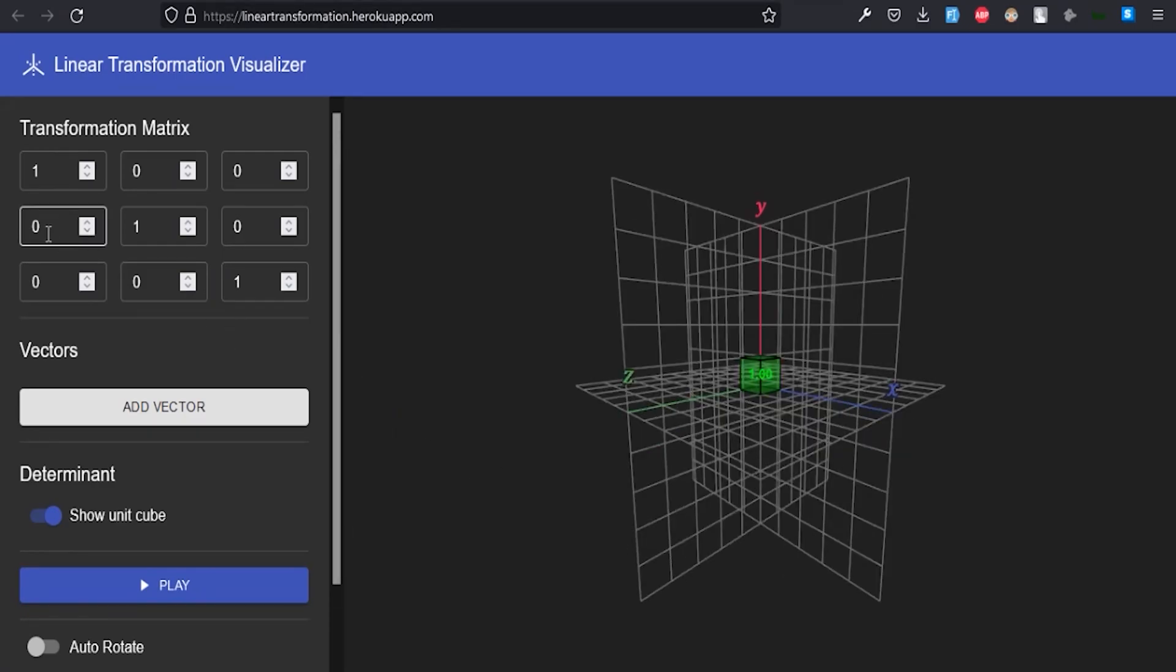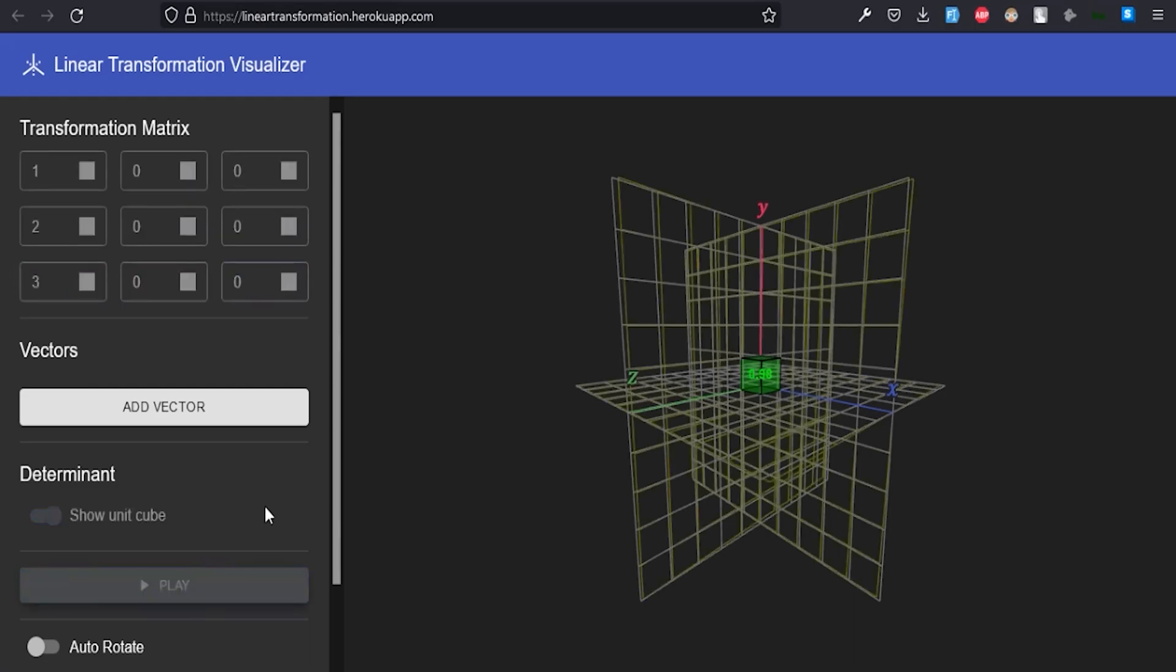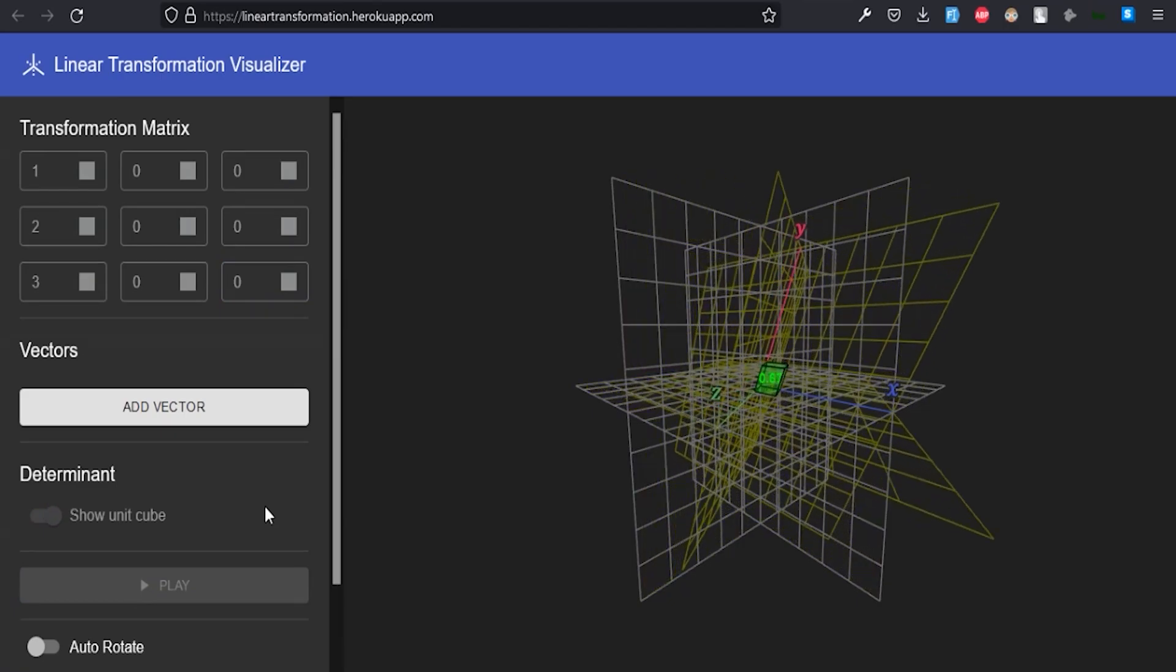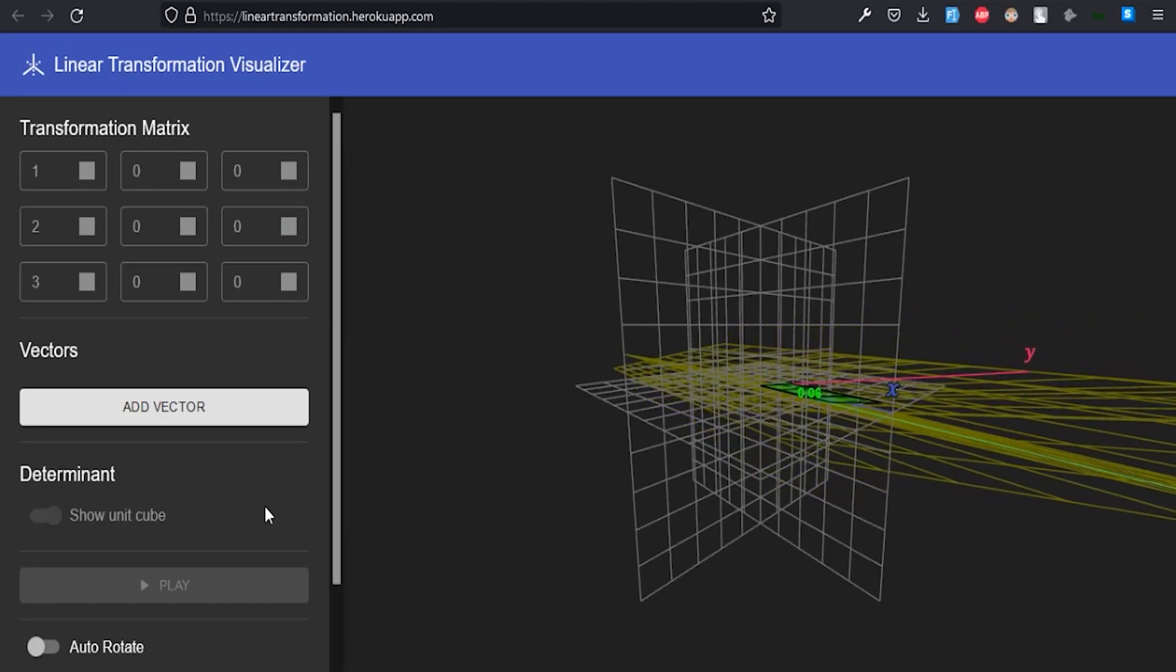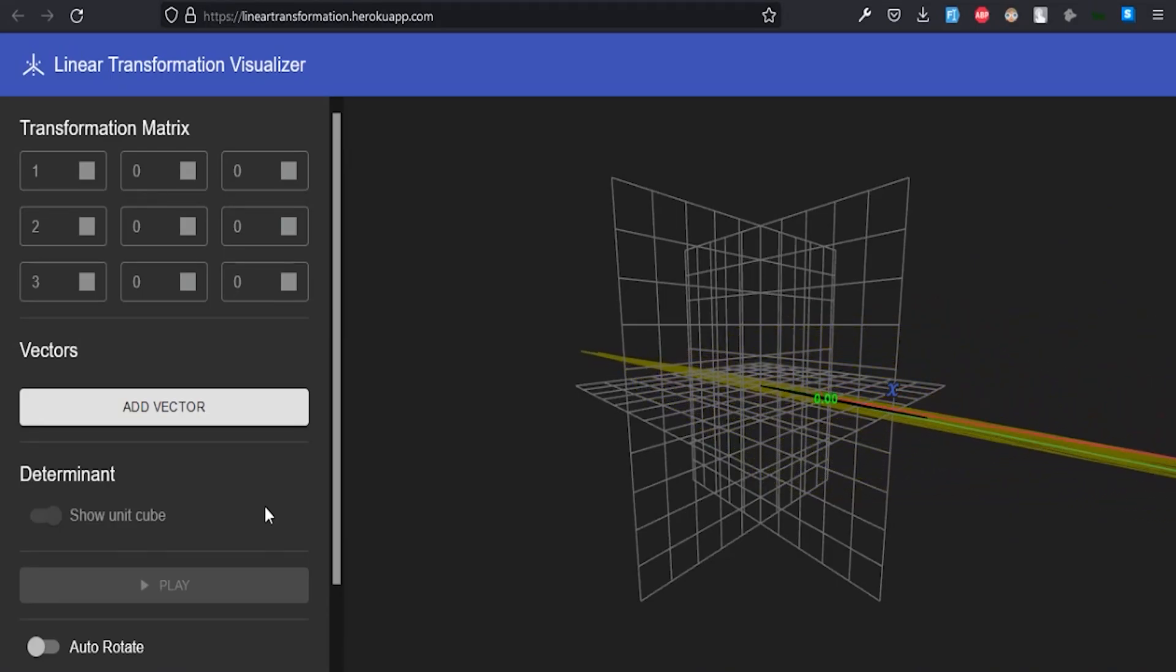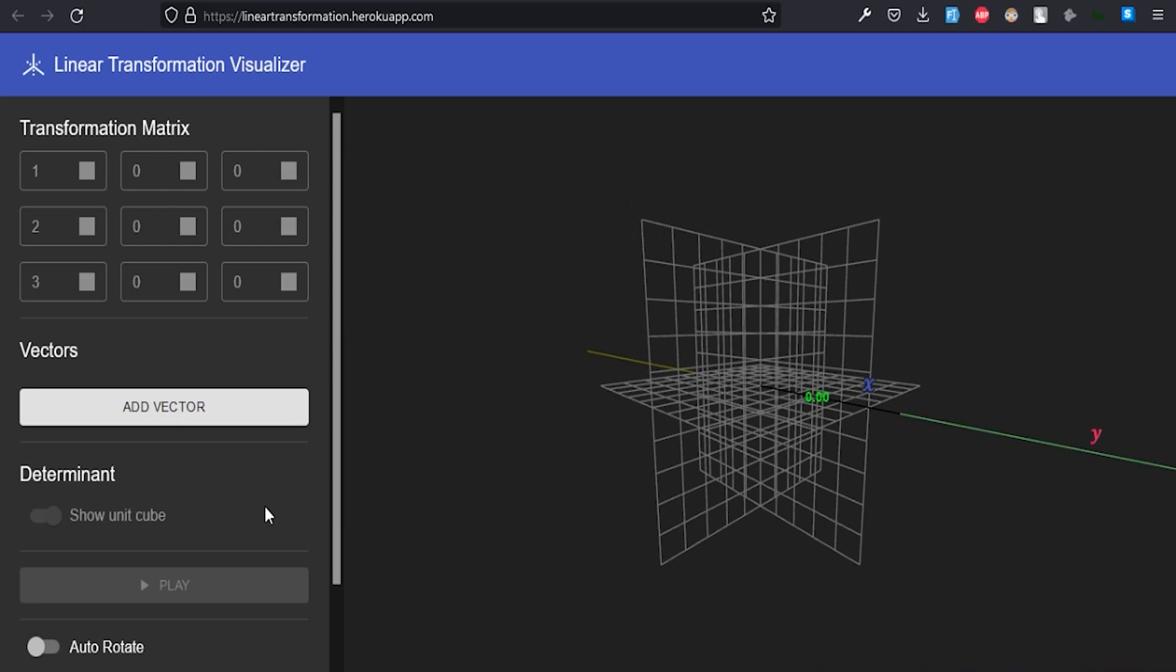So if the parallelopiped defined by the row vectors of a matrix has zero volume in n dimensional space then the matrix is not invertible. In our example you can see that I set the elements of the transformation matrix such that they are linearly dependent and the transformed space represented by the yellow planes collapses into a single plane and the volume of the parallelopiped or the unit cube in this case is now zero. Therefore this transformation matrix is not invertible.